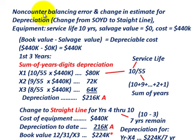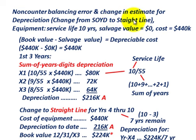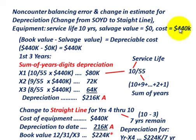What we're going to be going over here is a non-counterbalancing accounting error, and we're also going to be looking to change an estimate for depreciation expenses. We're going to change from the sum of years digits method to the straight line method for our depreciation. The equipment has a service life of 10 years, zero salvage value, and the cost of the equipment was $440,000.